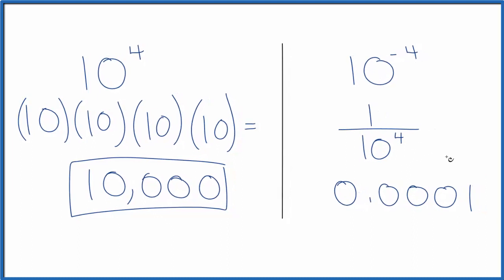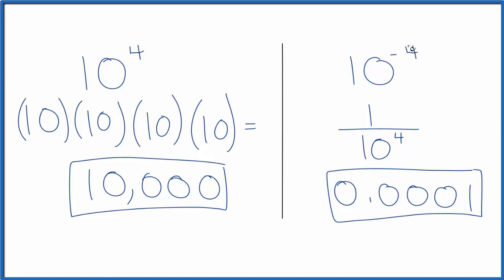So 10 to the negative 4th is 0.0001. It makes sense that it's a small number — we have a negative exponent. Positive exponent, we'll get a bigger number. This is Dr. B, figuring out what we get when we have 10 to the 4th power and 10 to the negative 4th power.